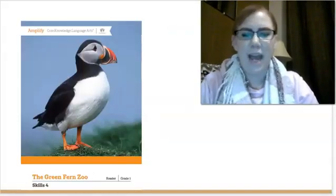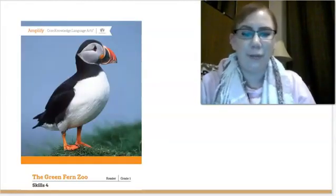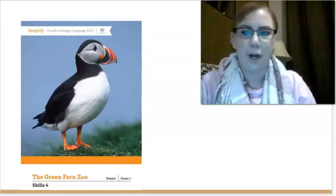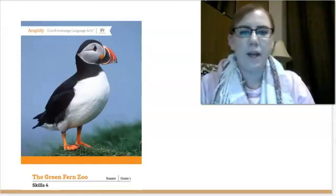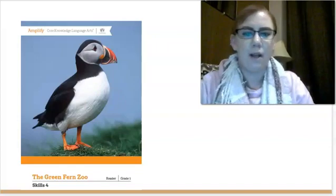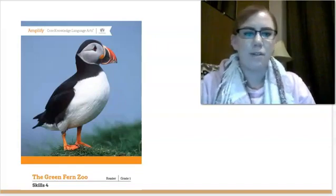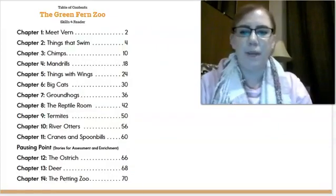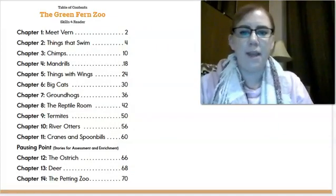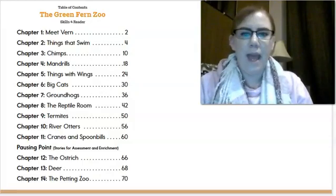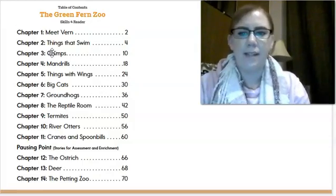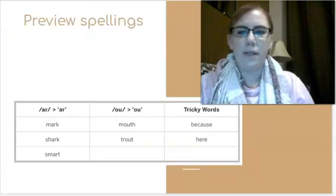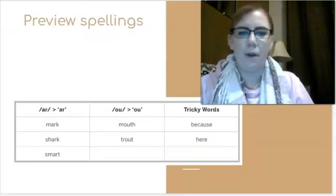The last thing we've got for today is a new chapter in the Green Fern Zoo book. Remember, this book is a non-fiction book. It has informational text and real facts. Today we're going to read chapter 2, Things That Swim. And I can see here that that is on page 4. Before we start, let's look at some words we might come across.